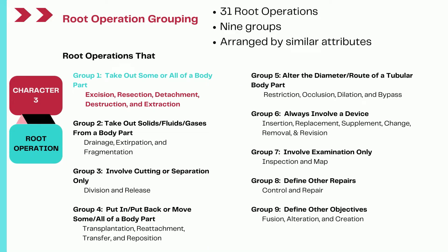As you all know, there are 31 root operations in the medical and surgical section of PCS, and these 31 root operations are divided into nine groups based on similar kinds of procedures and attributes. Today we are looking at root operation group one, which specifically covers root operations that take out some or all of a body part. The root operations in this group are excision, resection, detachment, destruction, and extraction.